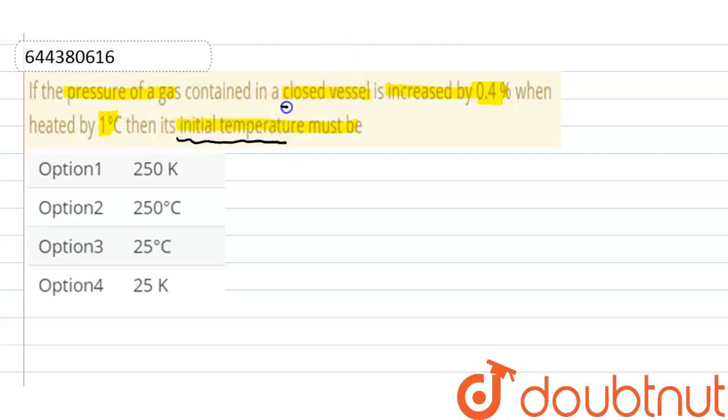And in the question given is closed vessel, that means volume here is constant. And according to Gay-Lussac's law, when volume is constant, pressure is directly proportional to temperature.